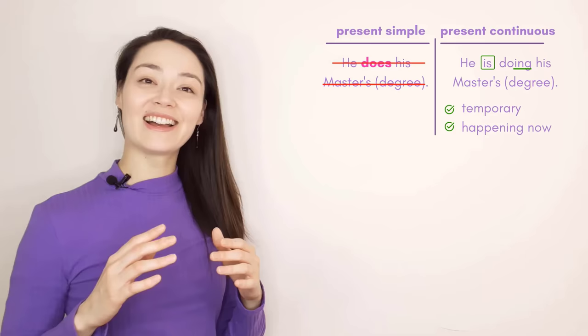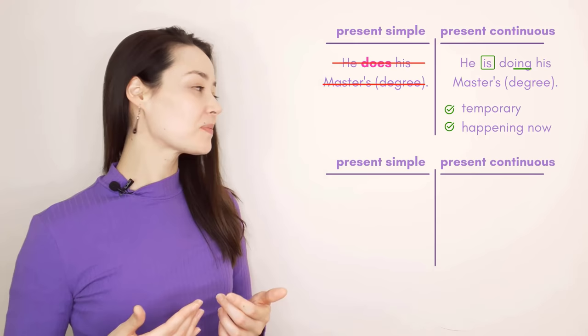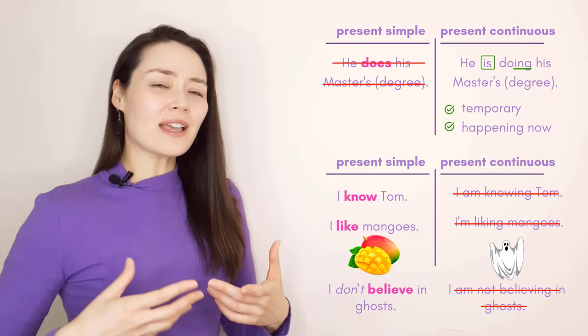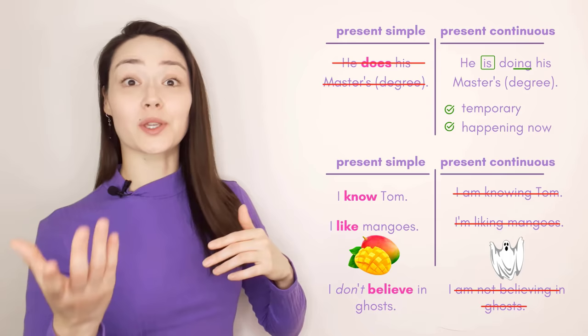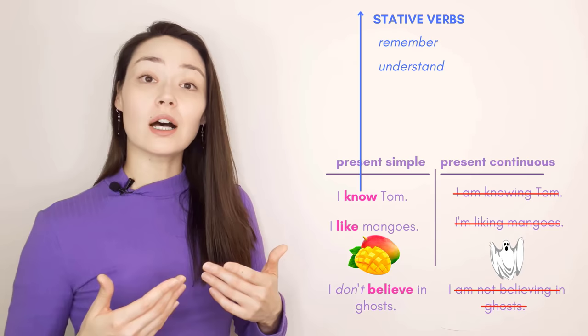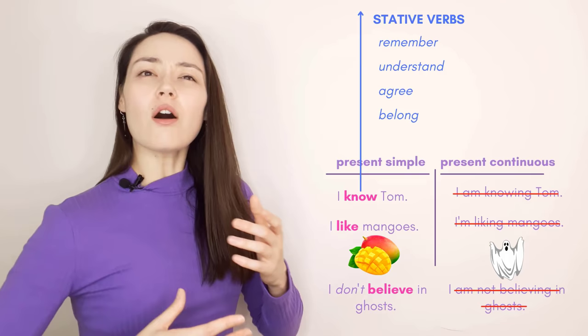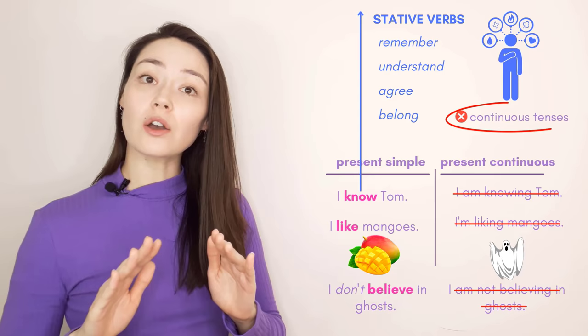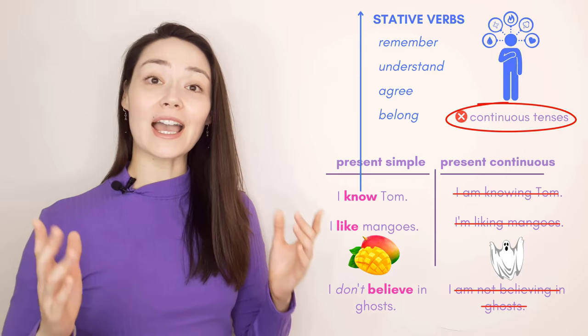Let's look at verbs that are not normally continuous. I know Tom. I like mangoes. I don't believe in ghosts. It doesn't work in the present continuous because these are like facts — you know someone or you don't, you like something or you don't, you believe in something or you don't. We call these stative verbs. Remember, understand, agree, belong — these are all examples. Stative verbs show our emotions and thoughts. In English we do not use stative verbs in continuous tenses.